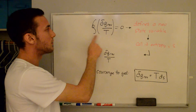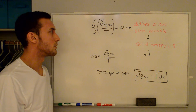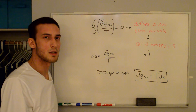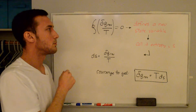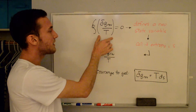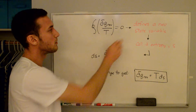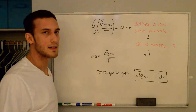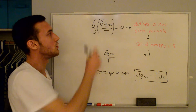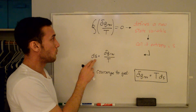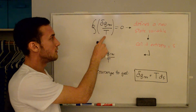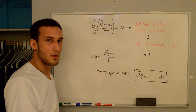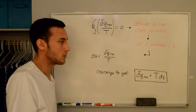It was found that the cyclic integral of δQ_reversible over T equals zero. For a more in-depth discussion, see Richard Feynman's physics lectures. Since this cyclic integral equals zero, it defines a new state variable — called entropy, denoted lowercase s for the intensive (per unit mass) form. We define dS equal to δQ_reversible over T. Rearranging, we get the reversible heat added to the system: δQ_reversible equals T dS.